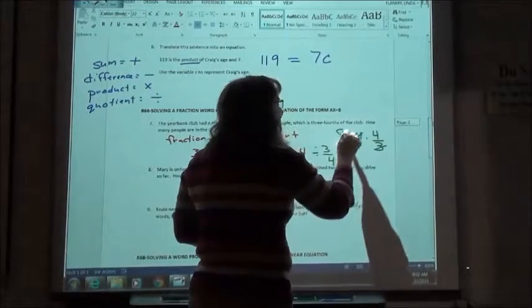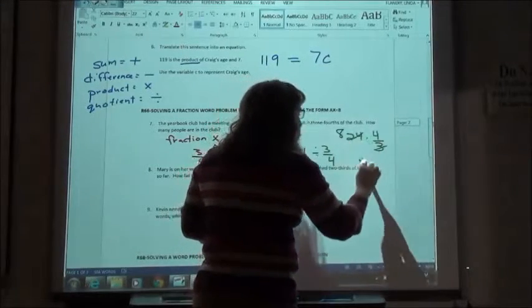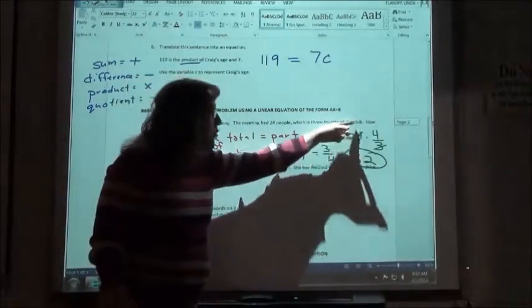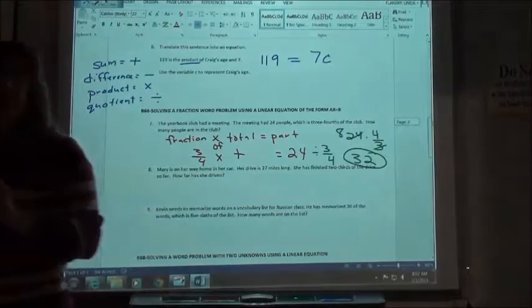Three goes into 24 eight times. Eight times four, 32. So there are 32 people in the club. Only 24 of them showed up for the meeting.